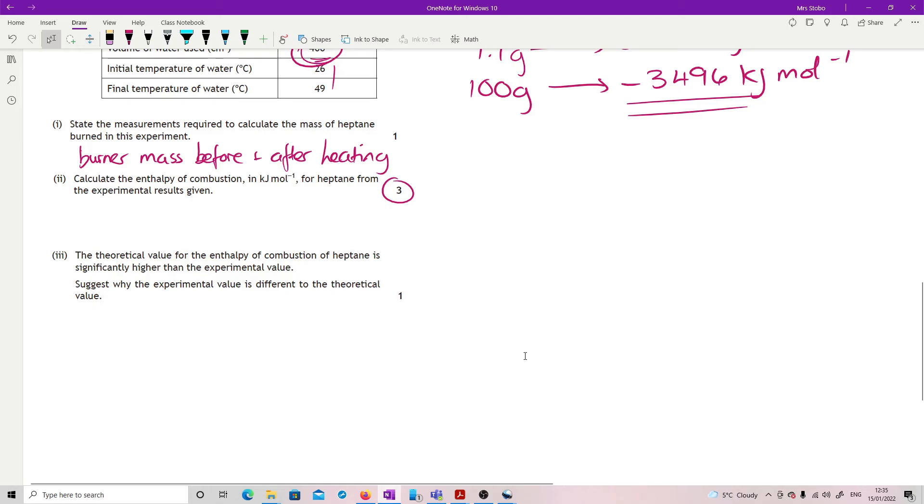The theoretical value for the enthalpy of combustion of heptane is significantly higher than the experimental value. Suggest why the experimental value is different to theoretical. I'm expecting you to write heat loss to surroundings. Even though they had that draft shield in there, that's not going to stop you heating the air and other things. And if you said it was heat loss to heating the container, that also would be fine. If you said that you had incomplete combustion of the heptane, if you said that there was evaporation loss of the heptane, so it wasn't actually burning, but you were still losing that mass. All of that was good. But that heat loss to surroundings is your standard answer that I'm expecting you to use.